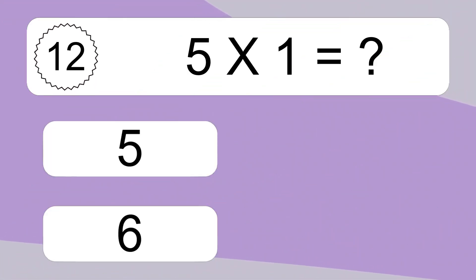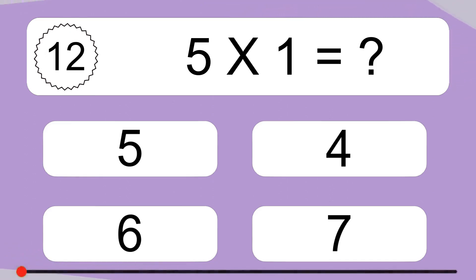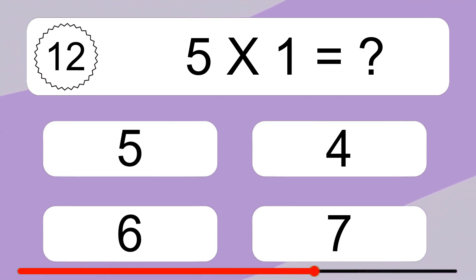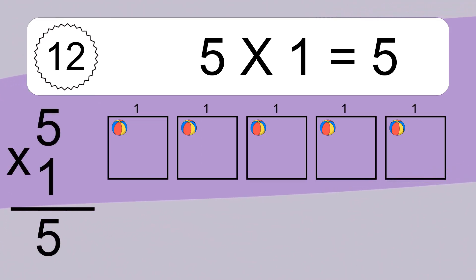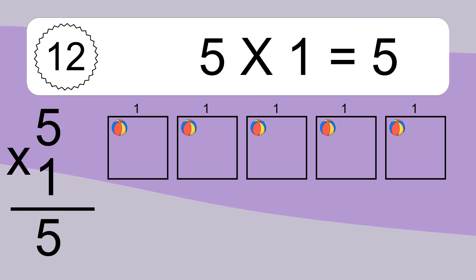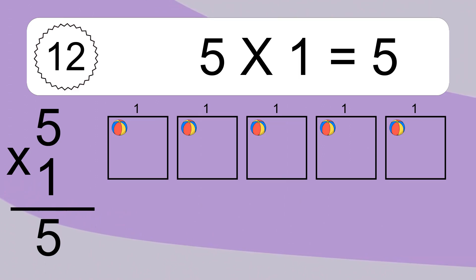5 times 1 equals what? 5 times 1 equals 5. We have 5 boxes, and each box has 1 colorful ball inside. If you count all the balls in all the boxes together, you will have 5 times 1 balls. This equals 5 balls.